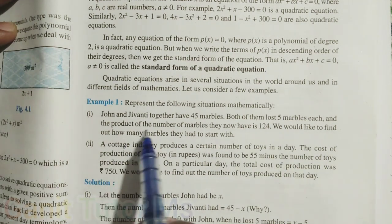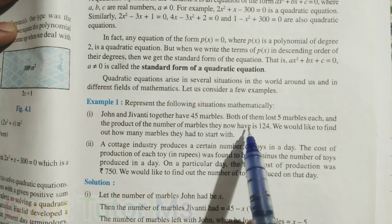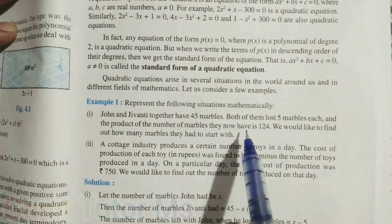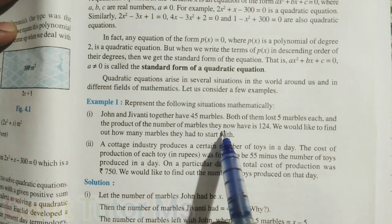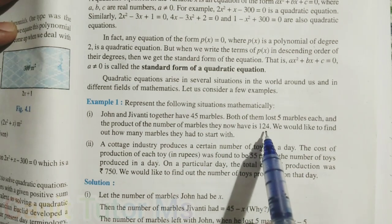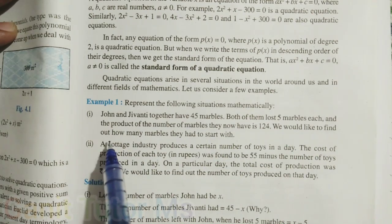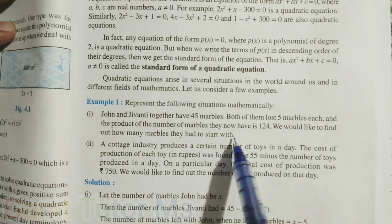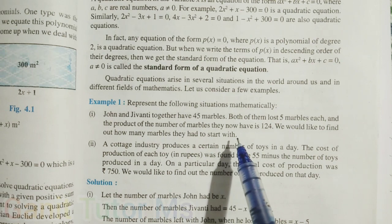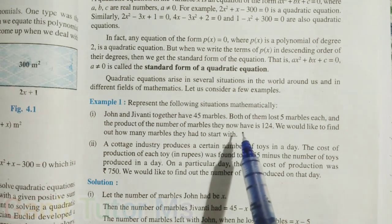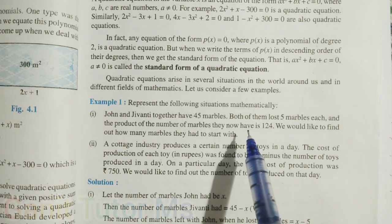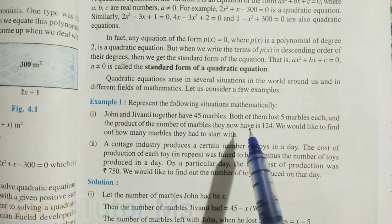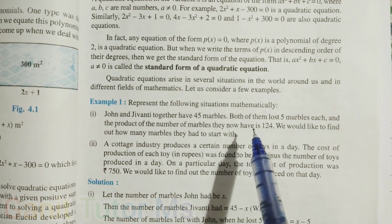After losing 5 marbles, the product of the marbles have 124. We would like to find out how many marbles they had to start with. So we can represent the situation mathematically in equation form. That is enough. No need to solve the problem.